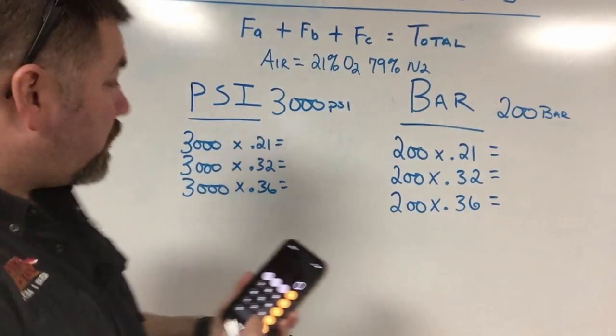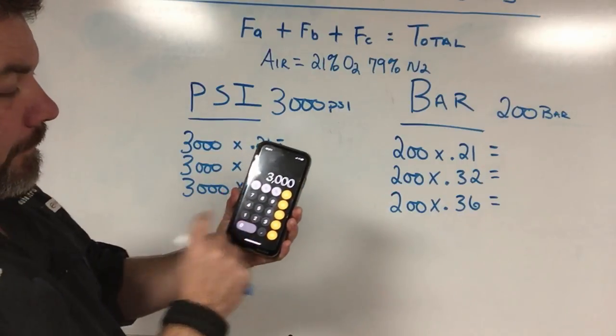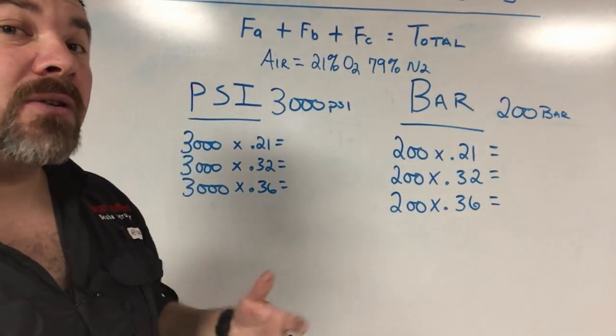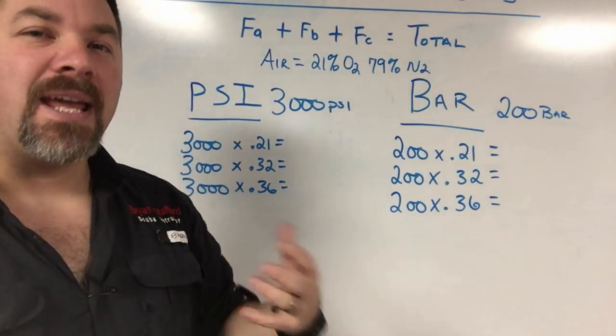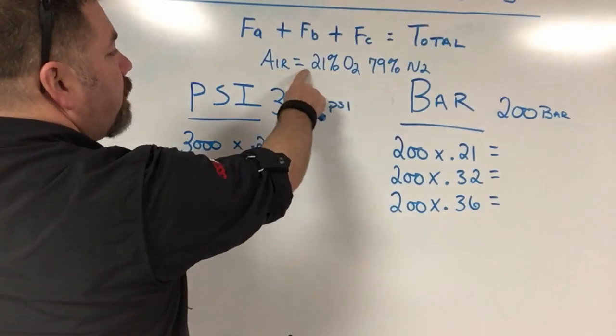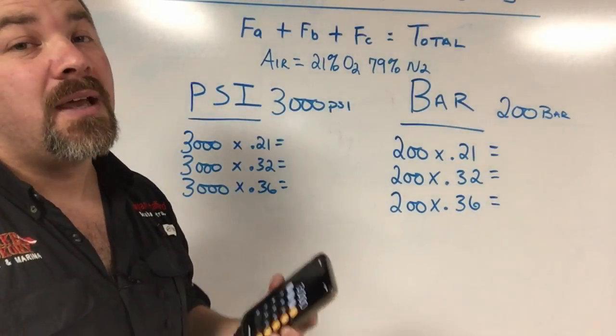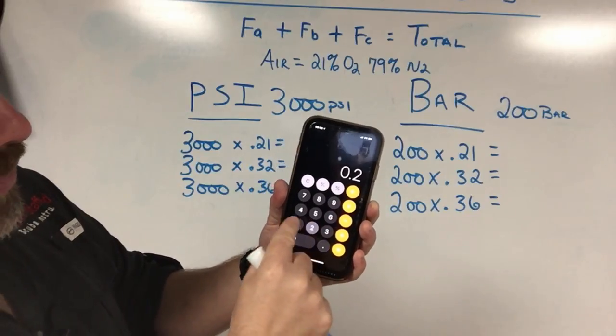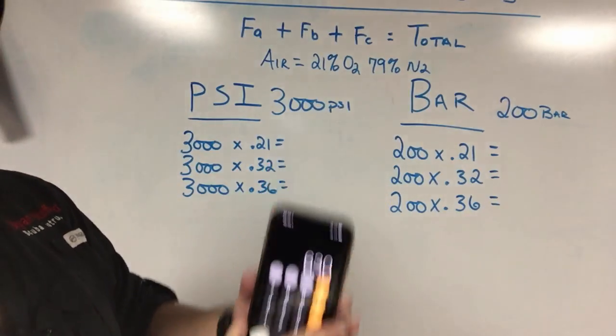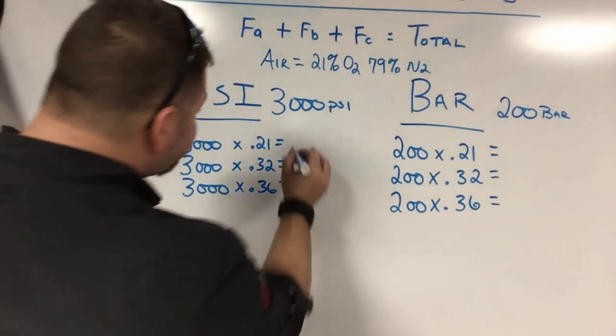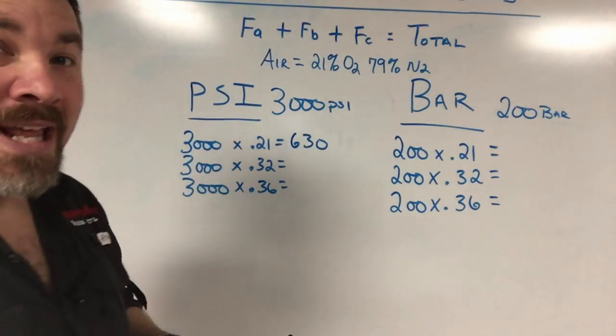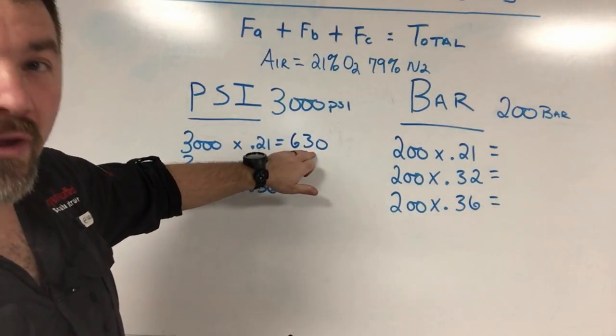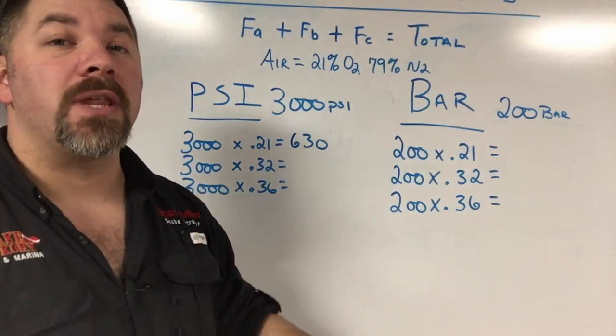To calculate in the imperial system first, if I need to know how much PSI is in a standard breathing gas mix at 3,000 PSI, I simply take 3,000 and multiply it by the partial pressure of O2. In standard breathing gas, that's 21%, which converts to 0.21 as a decimal. So 3,000 times 0.21 gives me 630 PSI. That tells me that 630 PSI of a 3,000 PSI cylinder is actually the oxygen content.